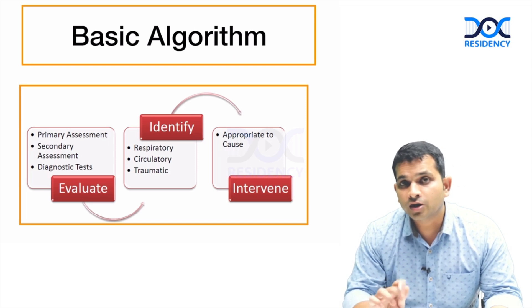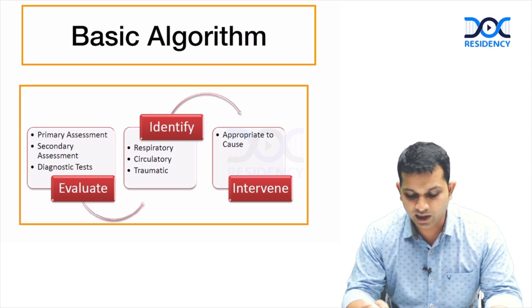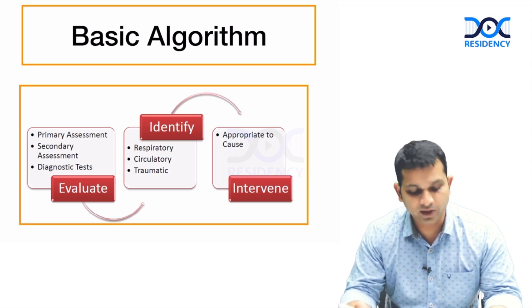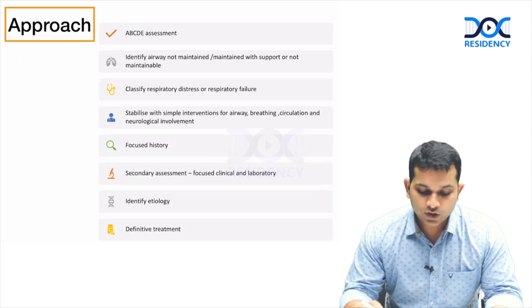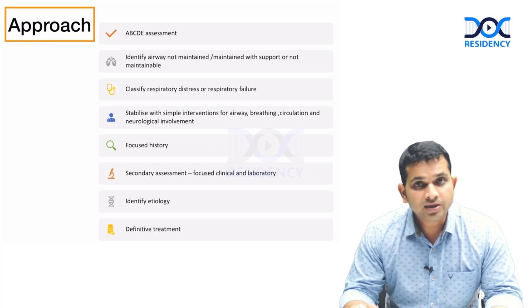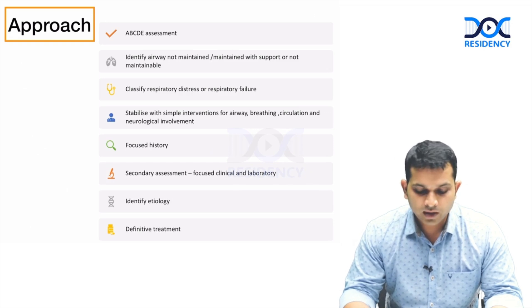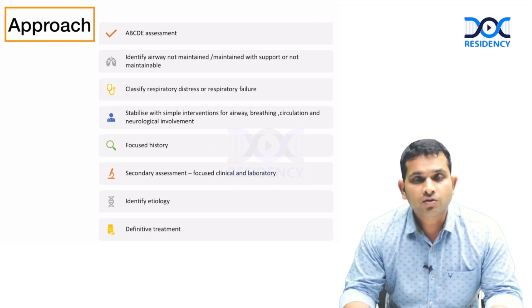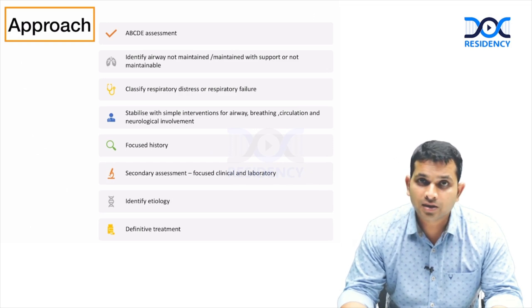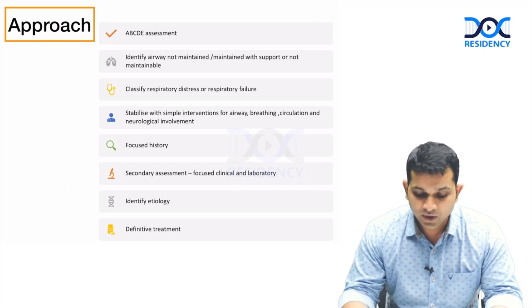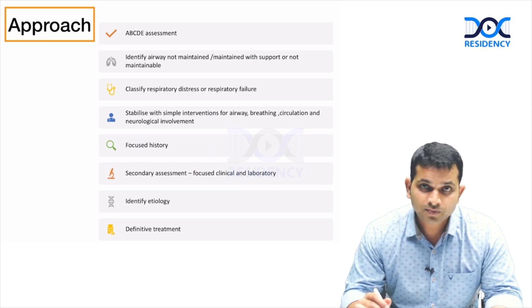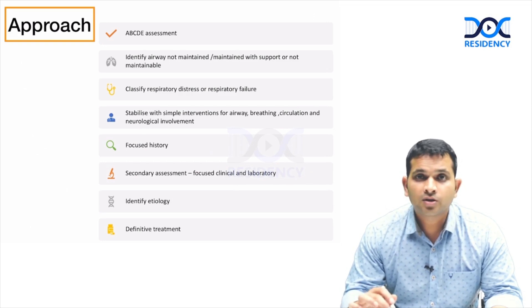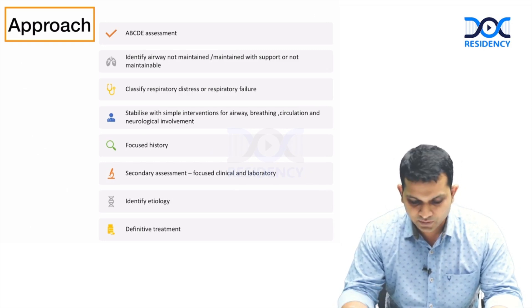This is the basic algorithm for any disease in pediatric emergency: evaluate, identify, and intervene. The approach remains ABCDE — airway, breathing, circulation, disability, and any external findings. Once you identify, you intervene there, stabilize the child, and go to the next step.